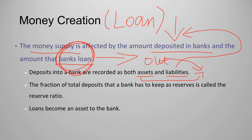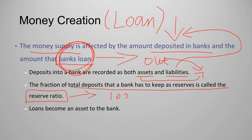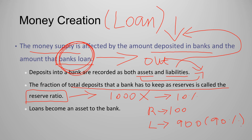The reserve ratio is the fraction of total deposits that a bank must keep as reserves. For example, if there are $1,000 in deposits, the bank cannot loan all of it out because the central bank requires a portion to be kept as reserves. If the reserve ratio is 10%, the bank must keep $100 as reserves and can loan out a maximum of $900, which is 90%.